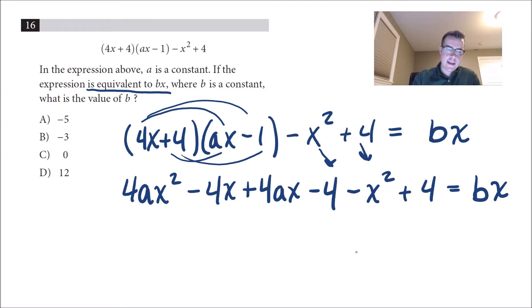So I'm going to combine any like terms that I can. So a negative 4 and a positive 4 will cross out there. That leaves me with 4ax squared minus 4x plus 4ax minus x squared has to equal bx.